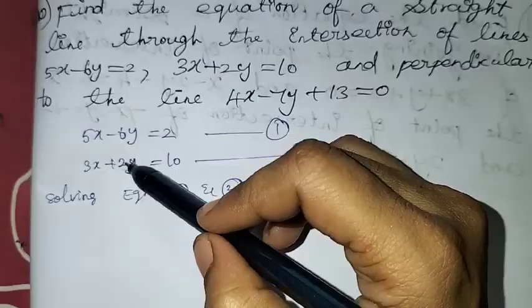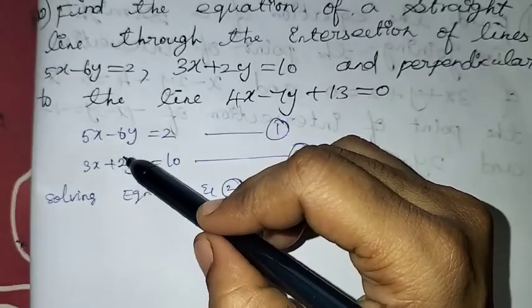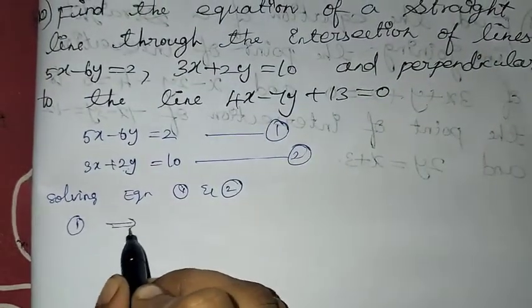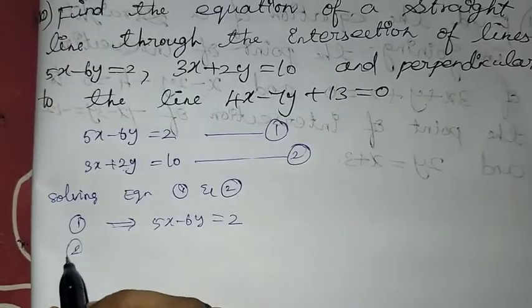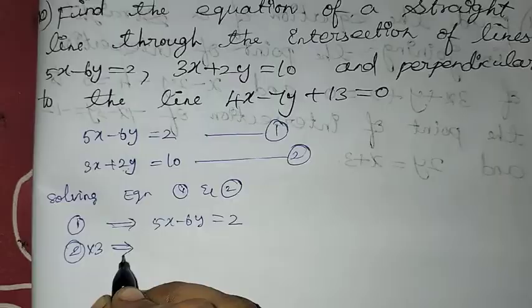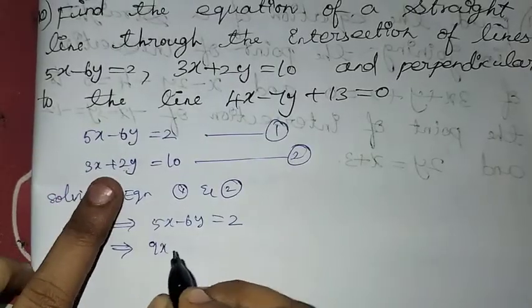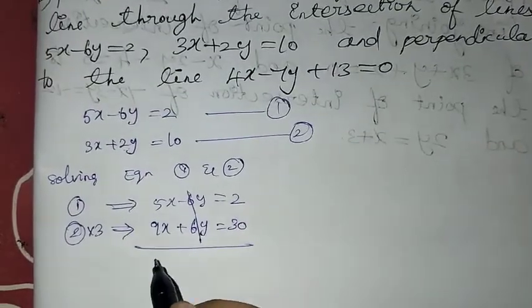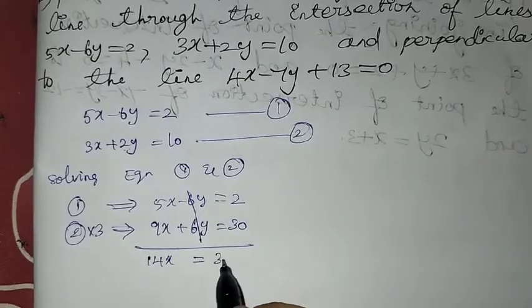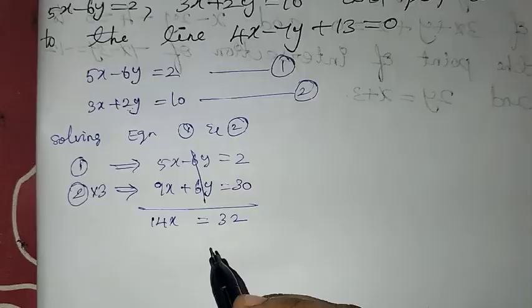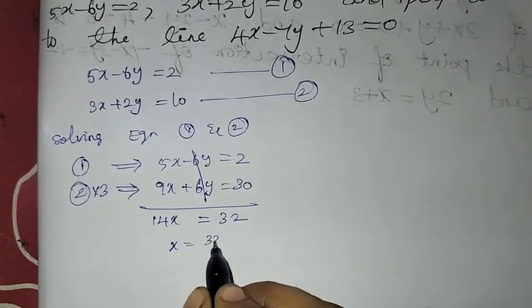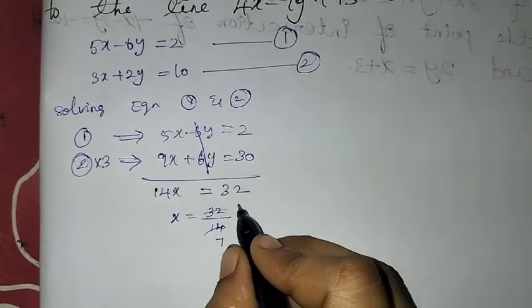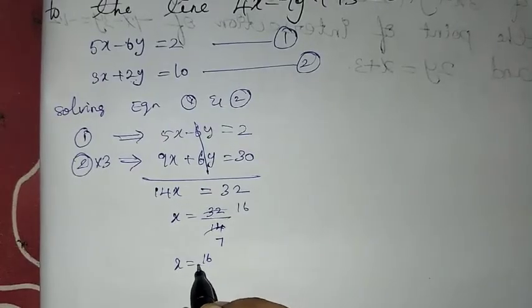Using the elimination method, we multiply the second equation by 3. After solving, we get 14x equal to 32, so x is equal to 32 by 14. Cancelling by 2, we get x equal to 16 by 7.